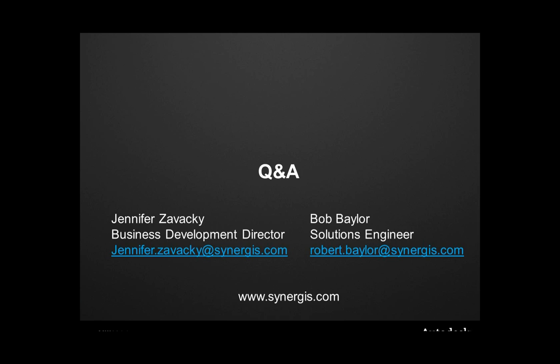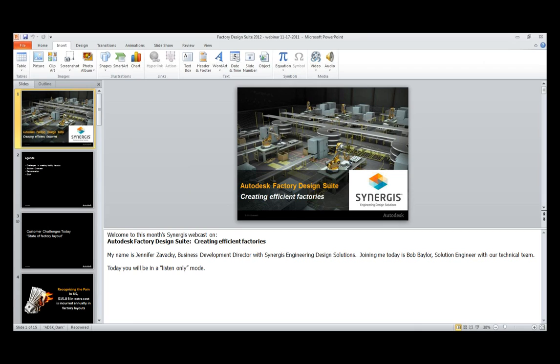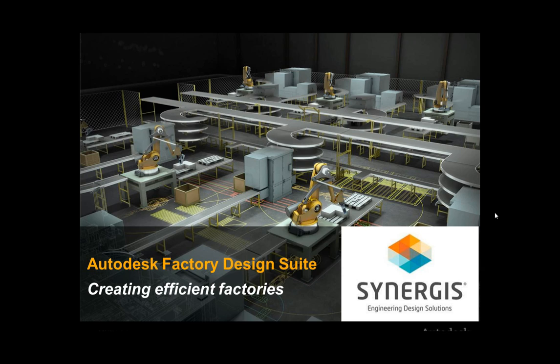That concludes our session. We have a question regarding hardware configurations and system requirements. Bob, if you just go to the Autodesk website and look up Factory Design Suite, it will give you a list of hardware requirements. We can also email that out to people with particular questions. There's another question: when will the factory course be available, what's the schedule and cost? We'll probably be coming out with that class in January, and the cost is $1,295 per person.